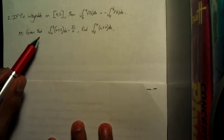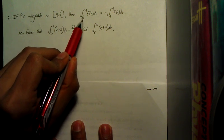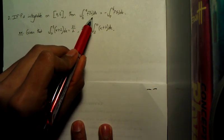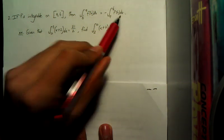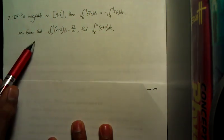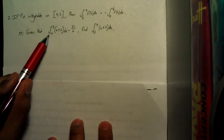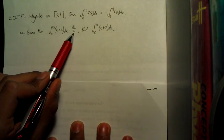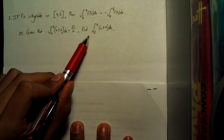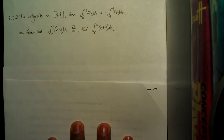Next one, if f is integrable on a to b, then the integral of b to a of that function equals negative times the integral from a to b of f(x) dx. So here's just a quick example. Given that the integral from 0 to 3 of x plus 2 dx equals 21 over 2, find the integral from 3 to 0 of x plus 2 dx.